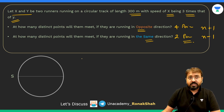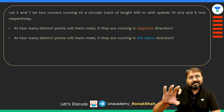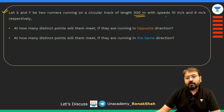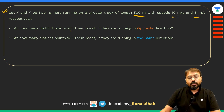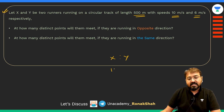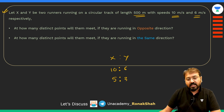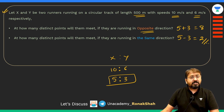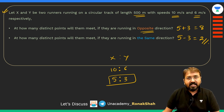What if we are given actual speeds rather than ratios? For example, X and Y on a 500-meter track with speeds 10 and 6 meters per second. Find their simplified speed ratio: 10:6 reduces to 5:3. Running in opposite direction, the number of meeting points is 5 plus 3 equals 8. Running in the same direction, it is 5 minus 3 equals 2 meeting points.